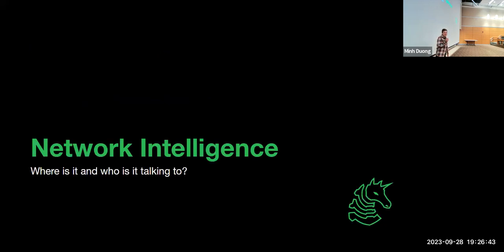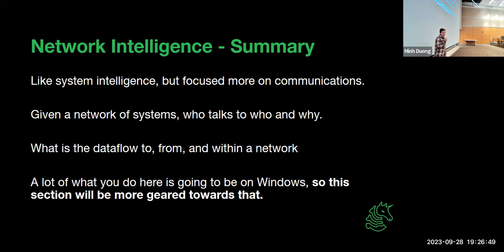Next up, network intelligence. Network intelligence focuses on communications between computers in a network. Given a network of systems, with network intelligence you can figure out who talks to whom and why. Many businesses use Windows systems, so it's good to know a little bit about Windows here. Often when attacking or pen testing a system, the machine you want access to is not the first machine you get access to — you might get into some random host that has nothing to do with the data you're actually interested in. This is where network intelligence really shines — it's like during the middle phase of an attack when someone's trying to build off an initial foothold and gain access to more systems while avoiding detection.